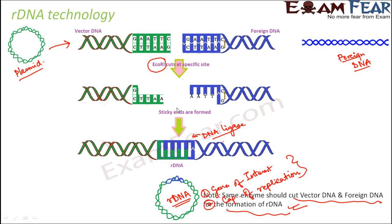Now, the restriction endonuclease enzyme — here EcoRI — cuts the DNA into multiple fragments based on wherever it finds the recognition sequence. The question is: how do we select, from all those fragments, which one is required for recombinant DNA formation? Not all fragments are needed — only the one that will combine with the plasmid DNA. A different technique called electrophoresis helps us to select from so many DNA fragments.